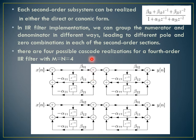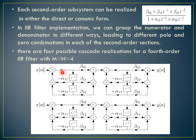Each second order subsystem can be realized in either direct or canonic form. In IIR filter implementation, we can group the numerator and the denominator in any different ways or any combination we can form. There are four possible cascaded realizations for a fourth order system where the number of zeros and poles are equal to four. This is a direct form 2 representation where we have adders, delays in the center, and adders on the left and the right side.